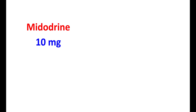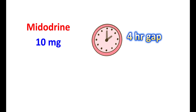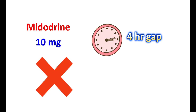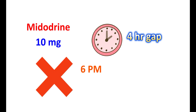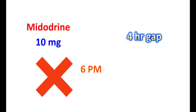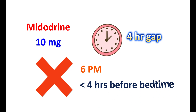With each dosing, at least a 4-hour gap should be maintained. It can be taken in the morning, midday, and late afternoon. However, it is not recommended after 6 p.m. to avoid nighttime supine hypertension. If symptoms need to be controlled more frequently, it can be given at 3-hour intervals, but should not be given after the evening meal or less than 4 hours before bedtime to avoid supine hypertension. Midodrine should be continued only in people who observe symptomatic improvement with initial treatment.